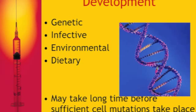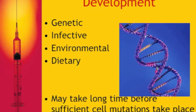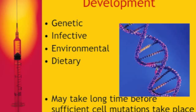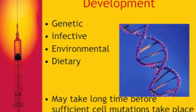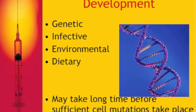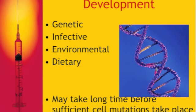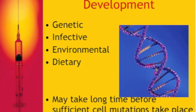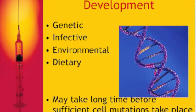Dietary factors that influence cancer development include animal fats, low-fiber diets, alcohol, and even grilled or smoked foods using charcoal. We encourage a diet higher in roughage and fiber, such as broccoli and cauliflower, which are the top two vegetables for cancer prevention.